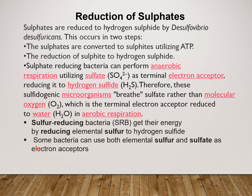Some bacteria can use elemental Sulphur as well as Sulphite as an electron acceptor. While Sulphite is commonly used as an electron acceptor, there are some bacteria which, instead of using Sulphite, can use elemental Sulphur as an electron acceptor. When elemental Sulphur is used as an electron acceptor it undergoes reduction and gets converted into Hydrogen Sulphide. This is all about the dissimilatory reduction of Sulphate.